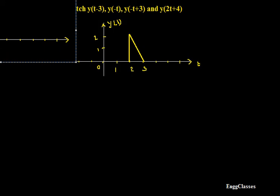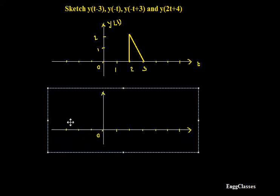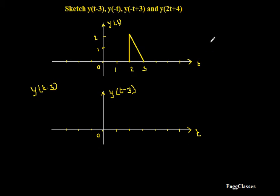Let me first get the x-axis and y-axis. Now I will consider sketching the very first signal, y of t minus 3. Whenever I consider operations — whether it is time shift, time scale, or reflection — as per the precedence rule, the first operation is time shifting.